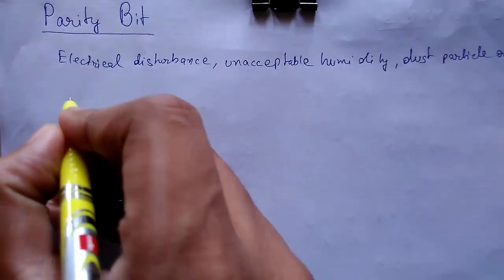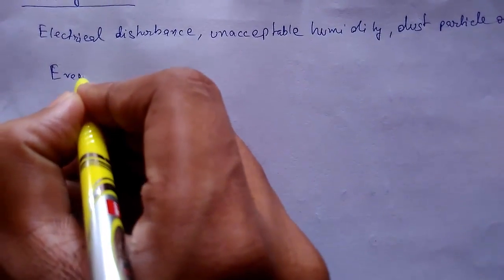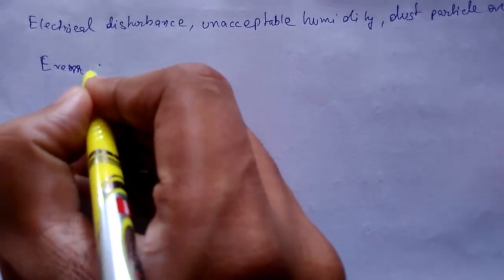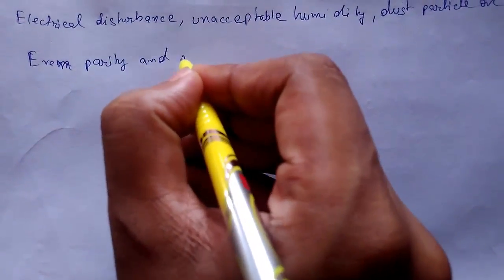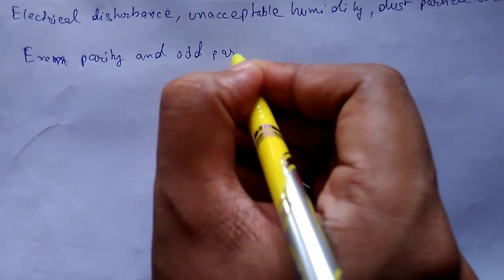In case of even parity, the parity bit is selected in such a way that an even number of ones are present. In case of odd parity, the parity bit is selected so that the total number of ones is an odd number.